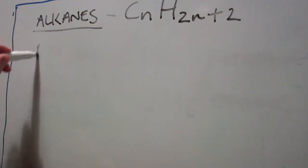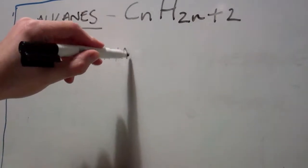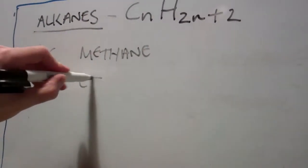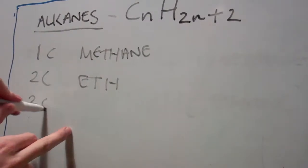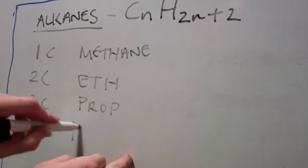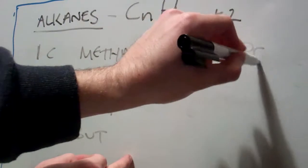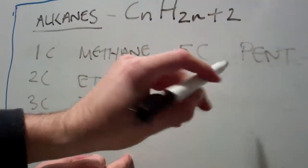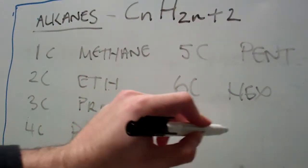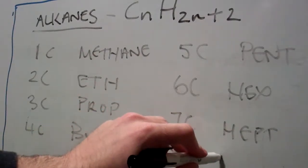Alkanes containing one carbon are called methane. Two carbons, we've got ethane. Three carbons, we've got prop. Four carbons, we've got butte. Five carbons, we've got pent. Six carbons, we've got hex. Seven carbons, we've got hept. And eight carbons, we have got oct.